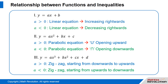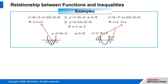When a is smaller than 0 — when a is negative — the equation will result in a zigzag starting from upwards to downwards. You should remember that the end of the graph always goes up if a is greater than 0 and goes down if a is smaller than 0.